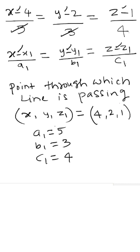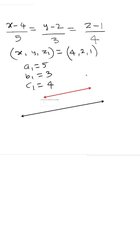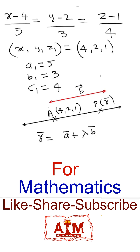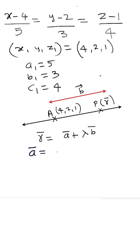To convert the Cartesian form to vector form, first write down the point through which the line is passing and the direction ratios. The given line passes through point A (4, 2, 1). Let vector b be the parallel vector and P be any point on the line with position vector r. The equation of the line is: vector r = vector a + λ × vector b, where vector a = 4i-cap + 2j-cap + k-cap.